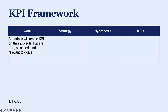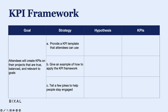Our second column is strategy. Knowing how our team plans to achieve our goals helps us create a narrative of what happened that led to success or failure. Either way, if we don't know what caused it we can't get better. Here I have three strategies I'm using to help you create KPIs that are true, balanced, and relevant. By outlining these strategies I can evaluate each to get a better picture of how I can replicate success or learn from failures. I'm providing a template which I will share with anyone who emails me.